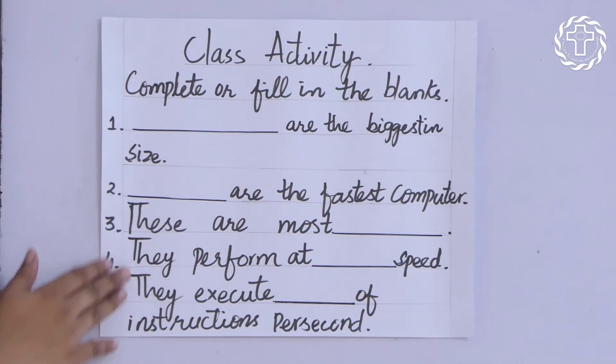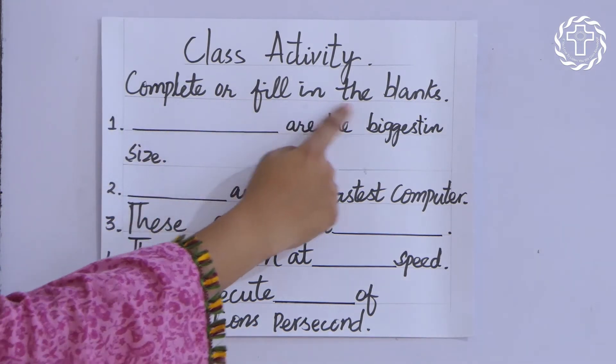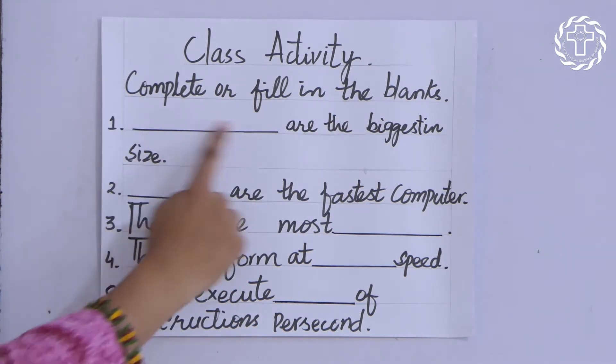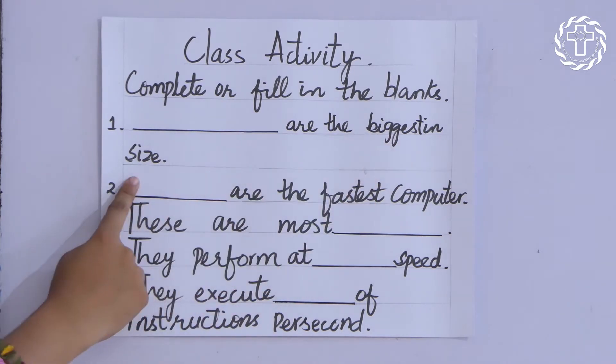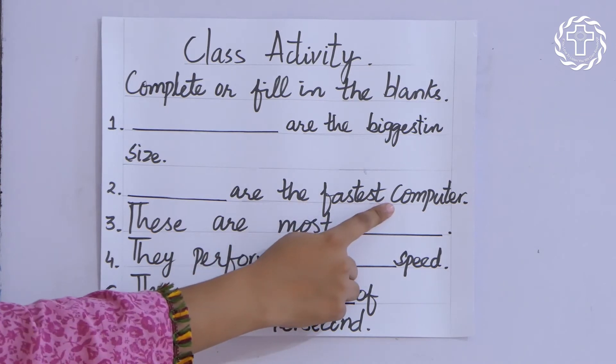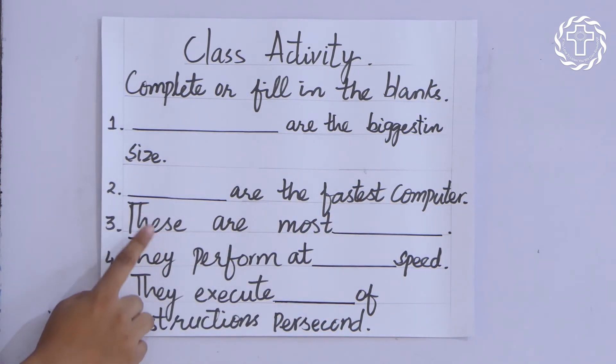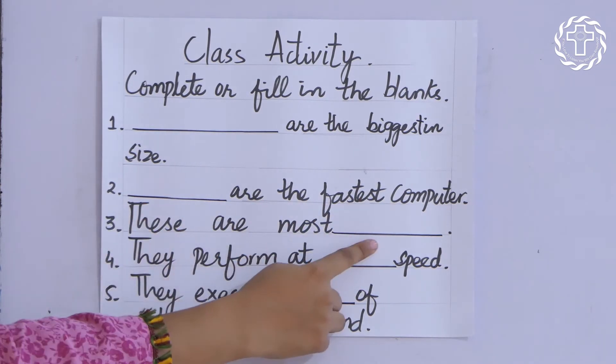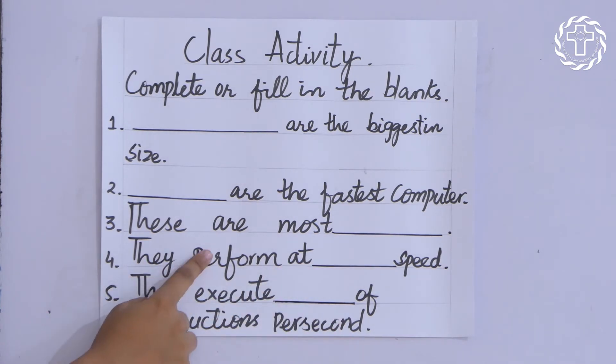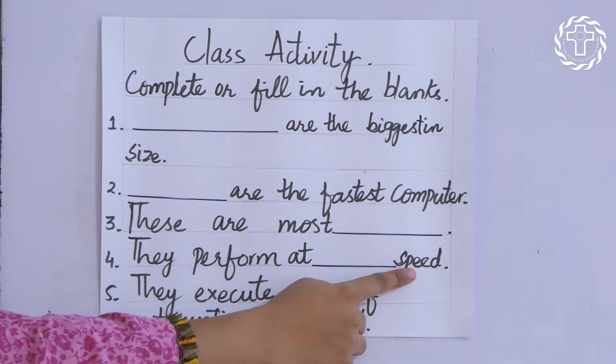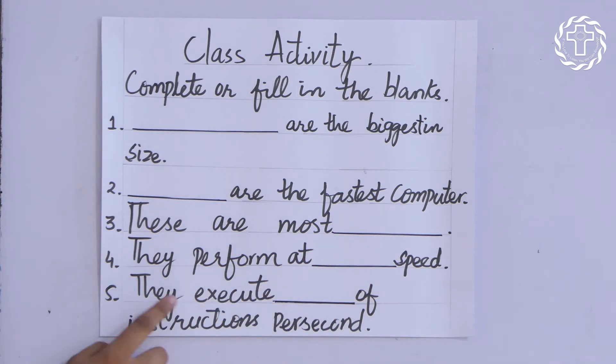Here is class activity for you which you have done in your copies. Complete or fill in the blanks: Dash are biggest in size—supercomputers. Dash are the fastest computer—supercomputers. These are most dash—expensive. They perform at dash speed—tremendous. They execute dash of instructions per second—trillions of instructions per second.